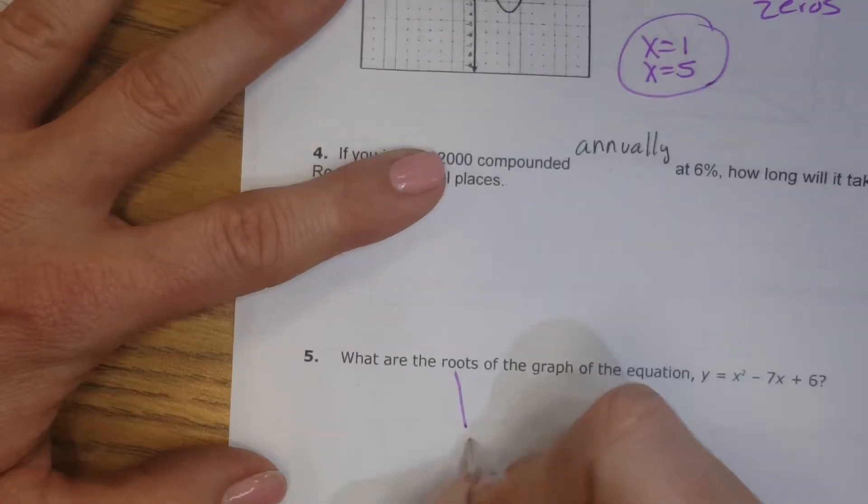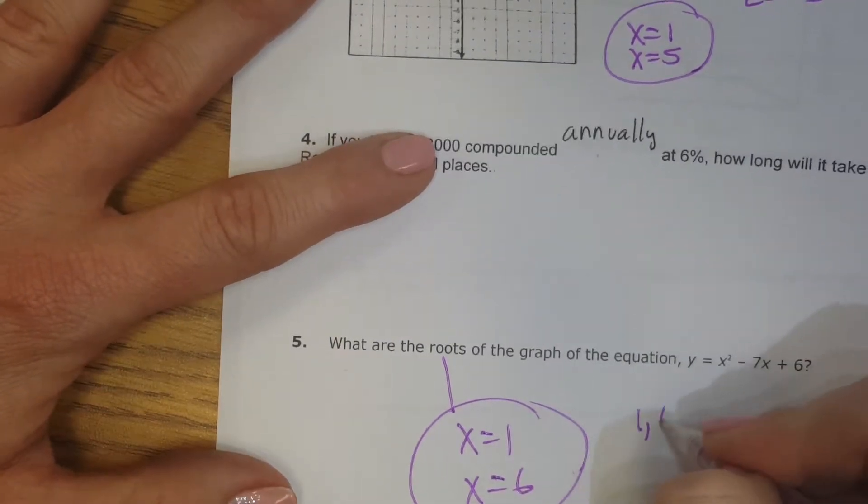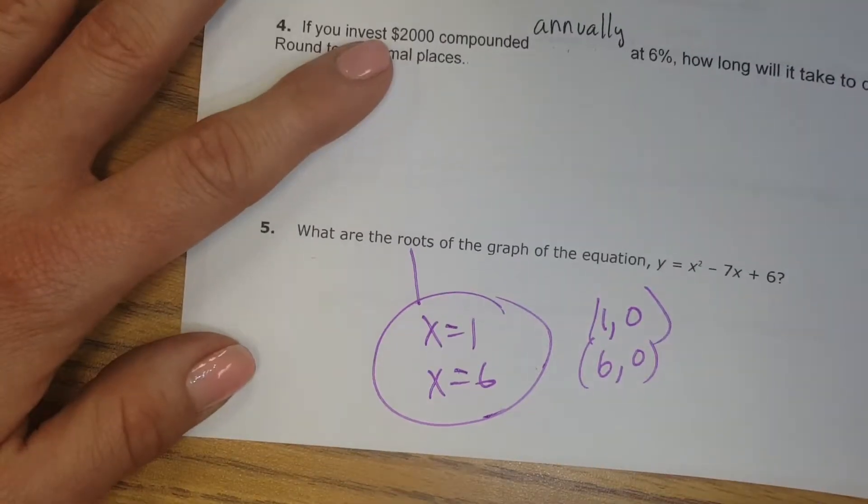Positive 1 and positive 6 are my two answers. So the two roots are x equals 1 and x equals 6. Or I could write them as (1, 0) and (6, 0). That's another way to write that same answer. All right. Turn the page.